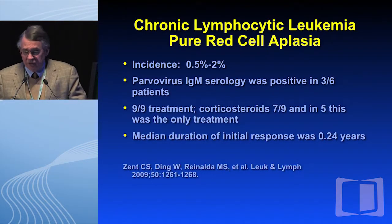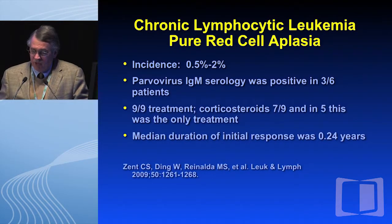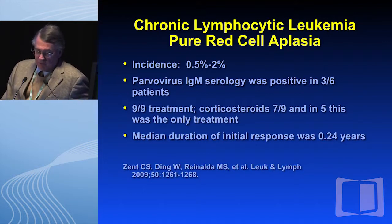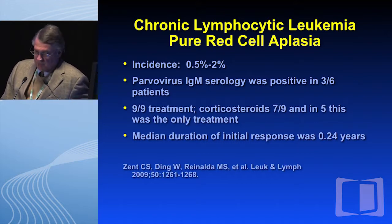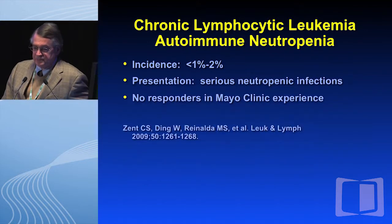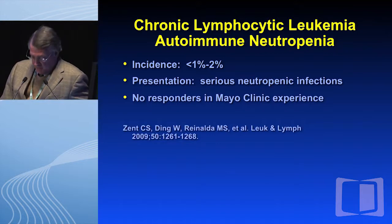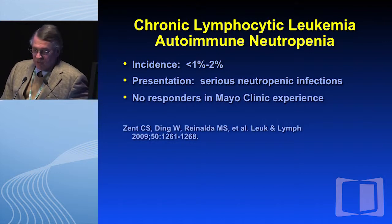Pure red cell aplasia can occur, with an incidence of 0.5% to 2%. The diagnosis is established by parvovirus testing. In our institution's experience, seven of nine were treated with corticosteroids, and in five it was the only treatment, with a median duration of response of 0.24 years. Autoimmune neutropenia has been reported, though it's difficult to sort through that data, and rituximab-induced neutropenia makes it more difficult to establish the diagnosis.